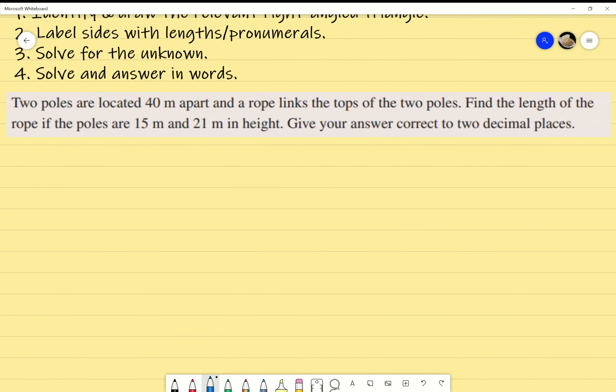So I've got an example over here. I'm going to go through it together. I've got an example where I've got two poles, which are located 40 meters apart, and a rope that links the top of the two poles. Now, for me, personally, diagrams are like half the answer. You need to be able to have a diagram that shows the assessor, first off, I know what I'm doing, and second off gives you a better idea of what you're doing as well. I'm going to try my best to draw two poles. I've got two poles here. They are 40 meters apart.